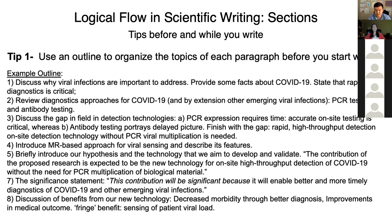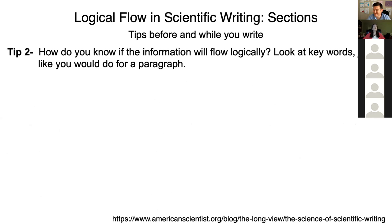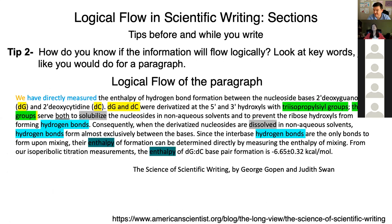Now that you've written an outline, how do you know it's a good outline? Here's my second tip: after you've written your outline, look to see if the information flows logically. I would suggest you look for keywords, just like you would do for a paragraph. Going back to our last scientific writing module on logical flow of a paragraph — the first sentence mentions deoxyguanosine and deoxycytosine, and those same molecules DG and DC were used in the second sentence. Likewise, triisopropyl silyl groups were mentioned in the second sentence.